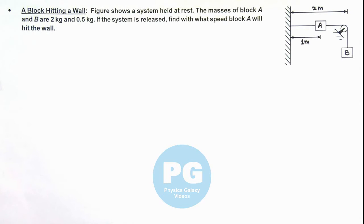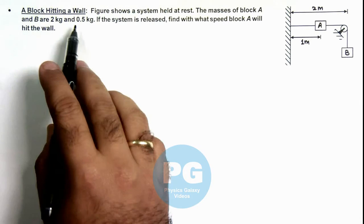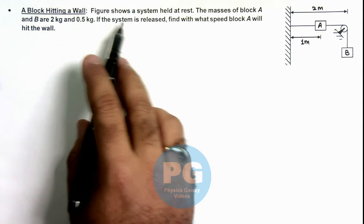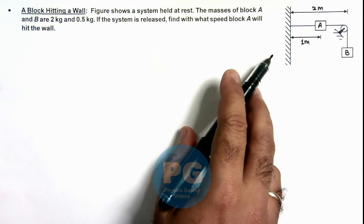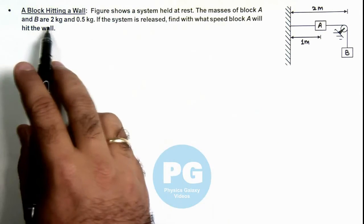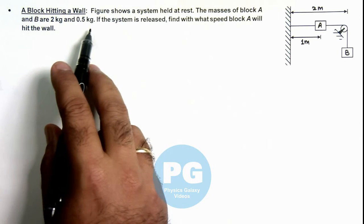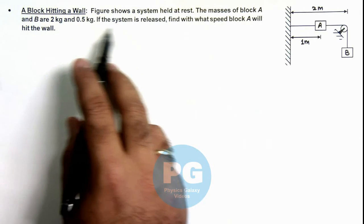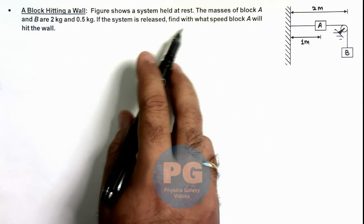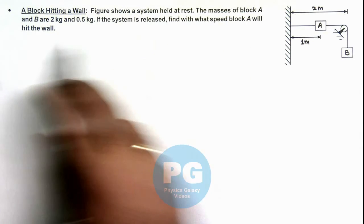In this illustration we'll discuss the analysis of a block hitting a wall. The figure shows a system held at rest, and the masses of block A and B are 2 kg and 0.5 kg. If the system is released, we are required to find with what speed block A will hit the wall.